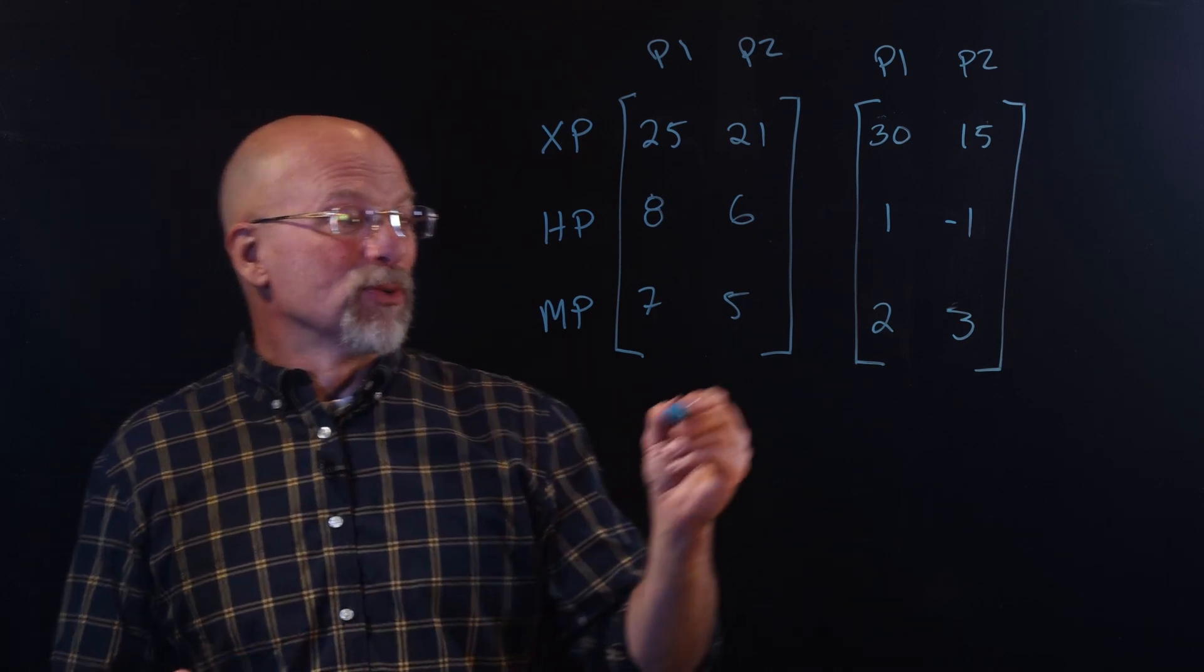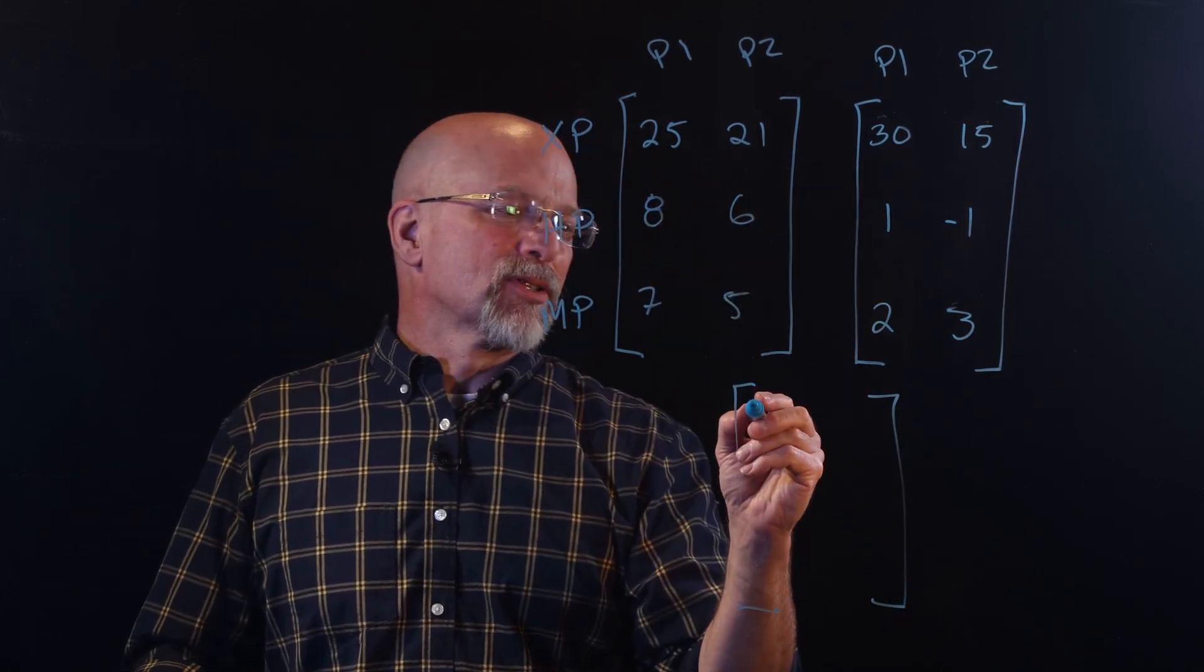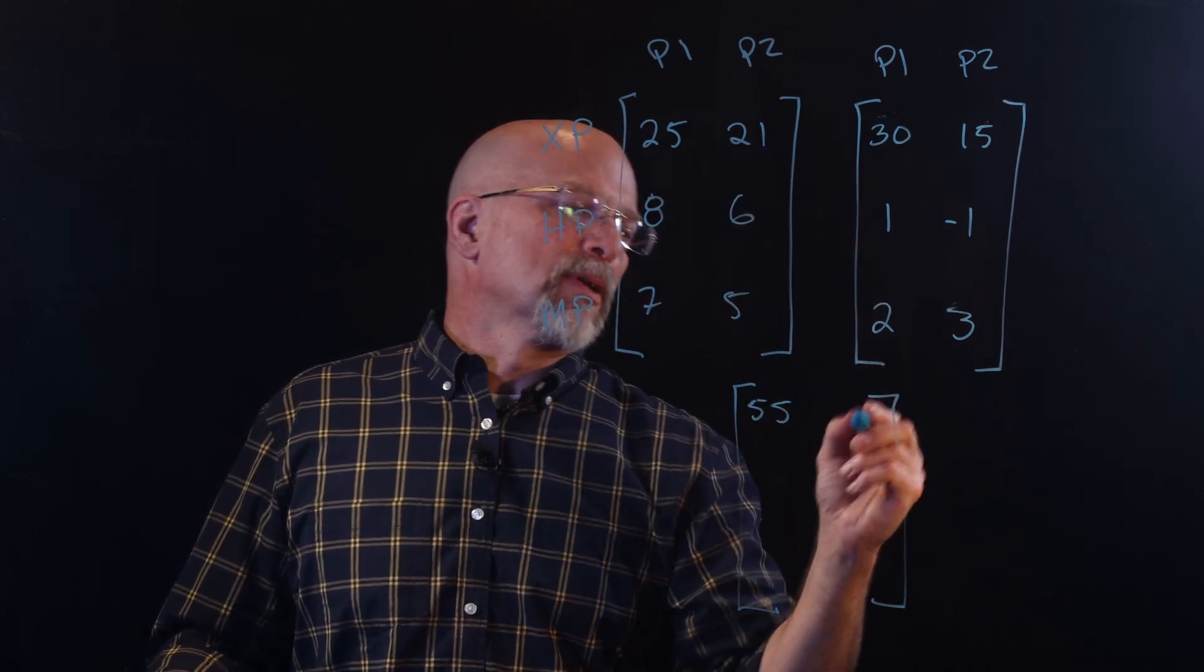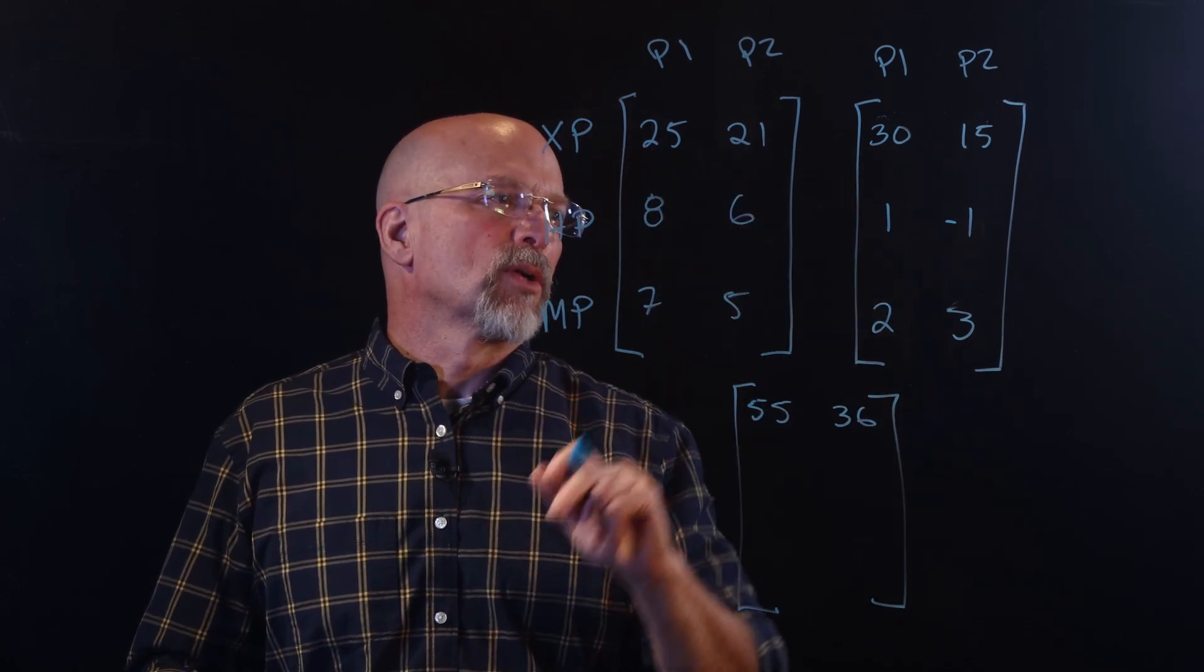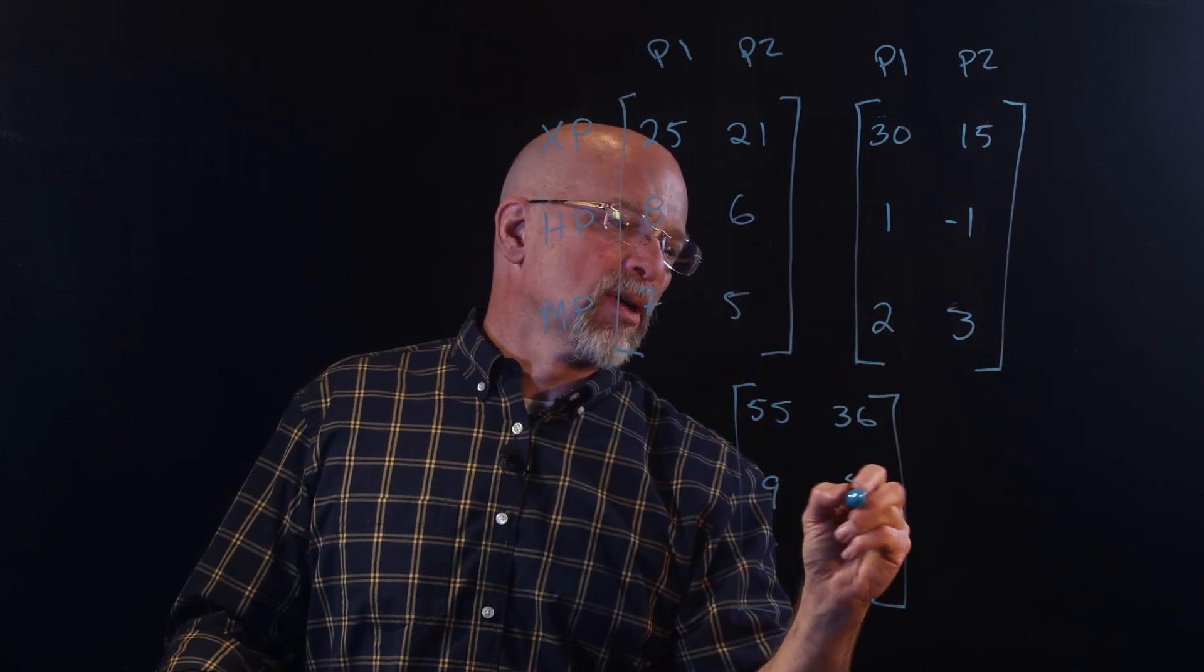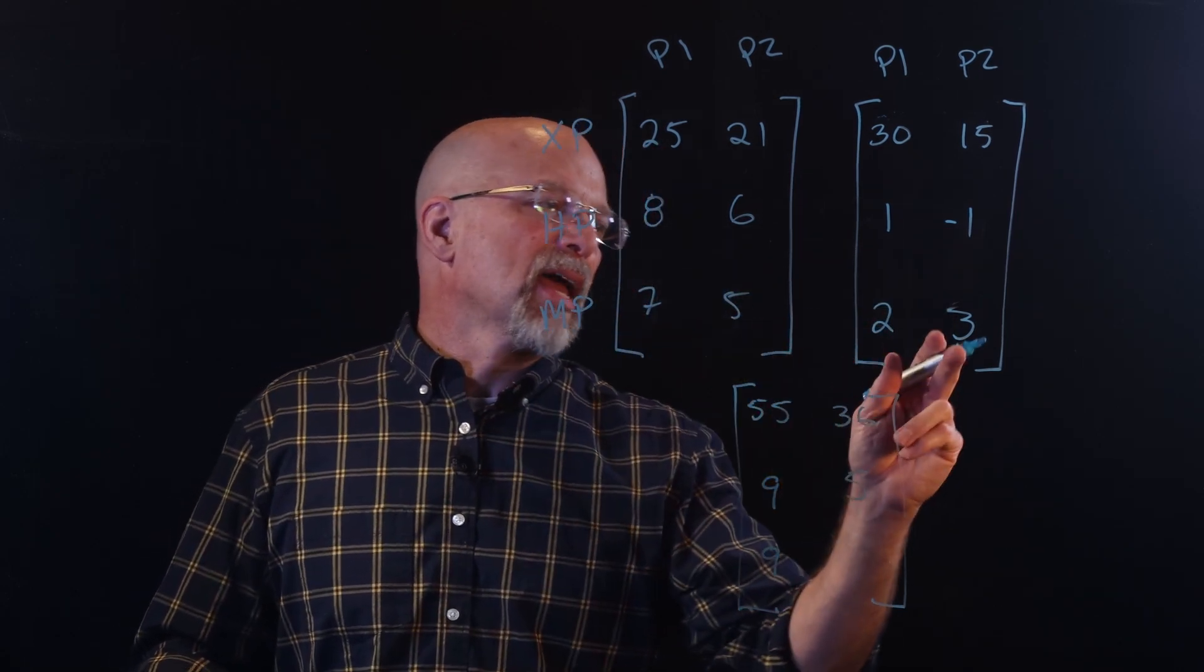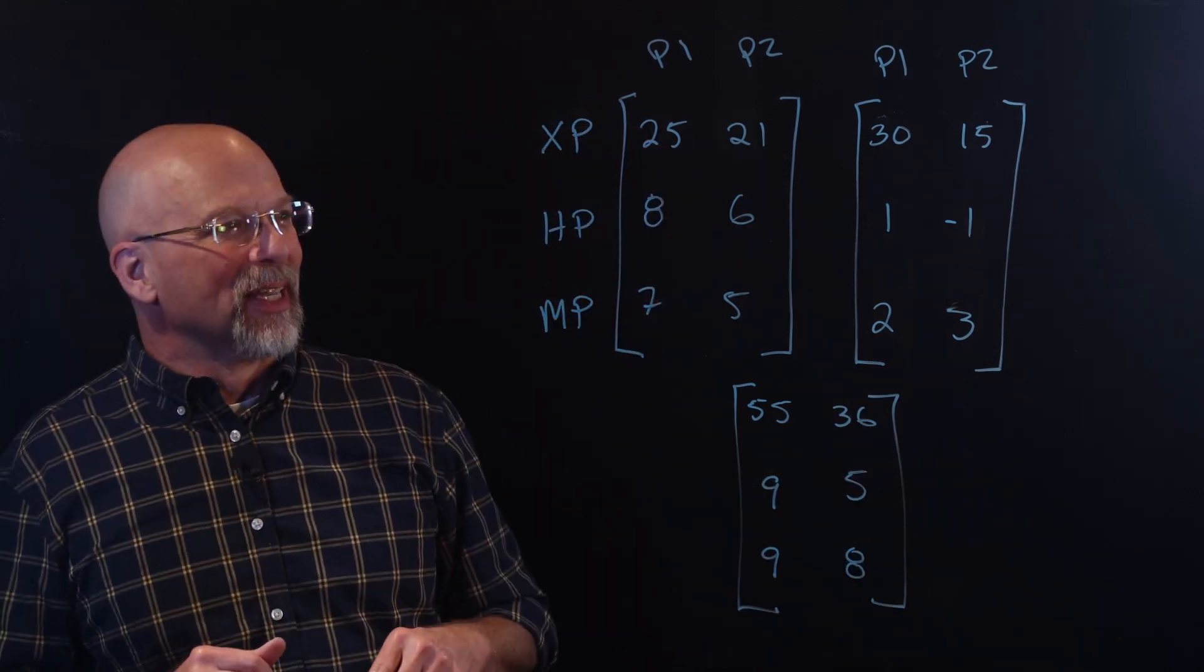Now, how do we come up with the new totals? Well, experience 25 plus 30, that's 55. 21 plus 15, that's 36. And then 8 plus 1 is 9. 6 minus 1 is 5. And then 7 plus 2 is 9, and 5 plus 3 is 8. So, enough of this silly example.